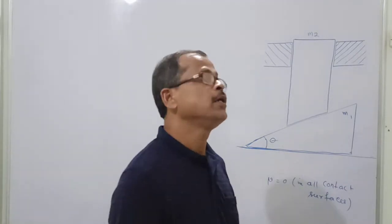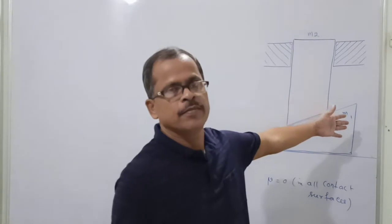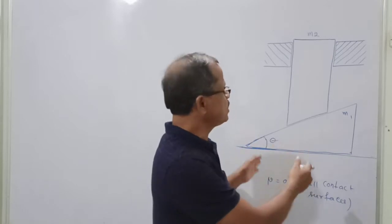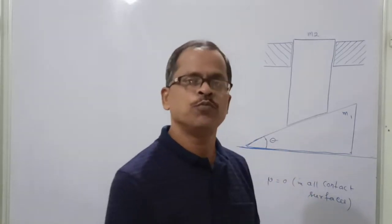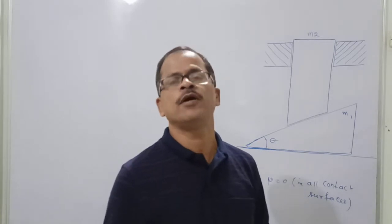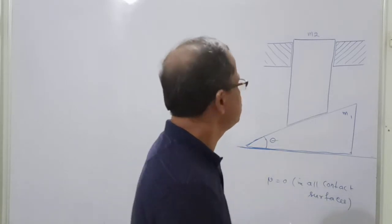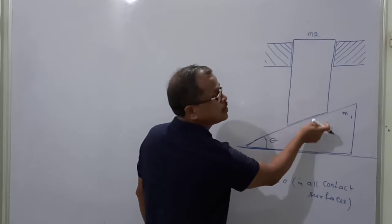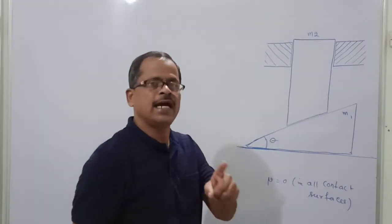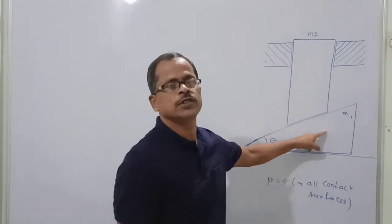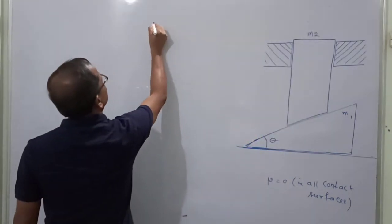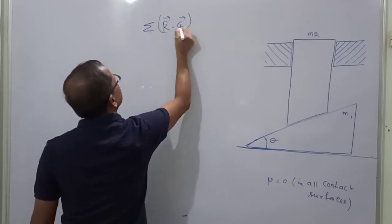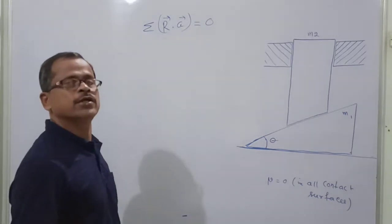In this video, we are going to solve a problem based on constraint equations and Newton's law of motion. But in this constraint equation, we have not taken a pulley. There is no pulley, no string, but we can develop a constraint equation. The constraint equation in this case will be due to the normal reaction which is combining this body and this body. So normal reaction R is common for both bodies. The constraint equation is: summation of reaction force and acceleration for the combined body is equal to zero.